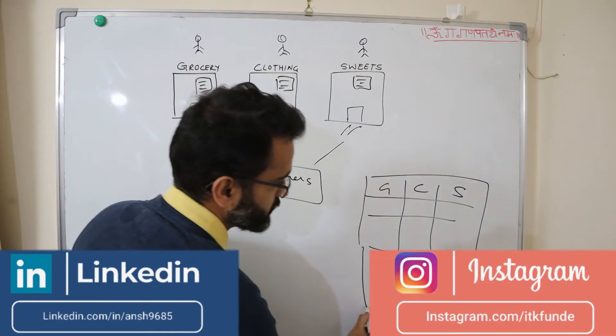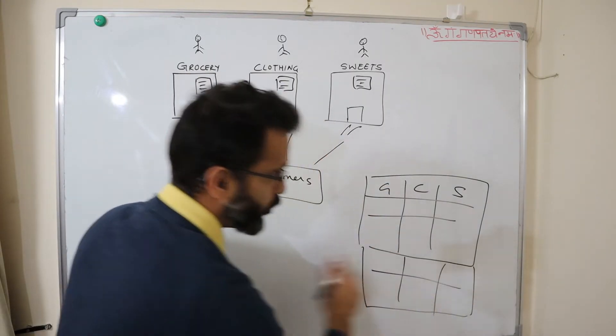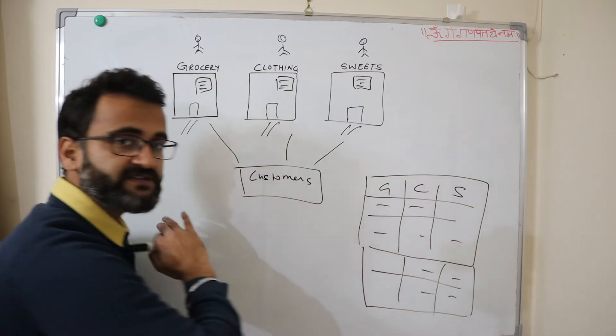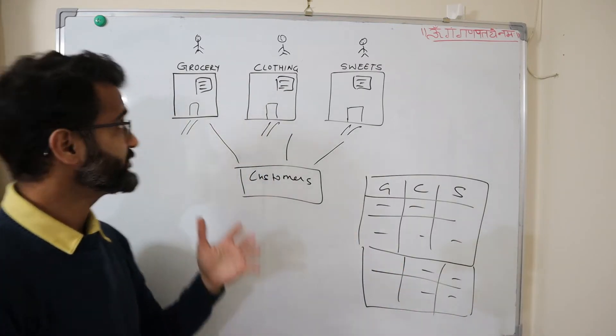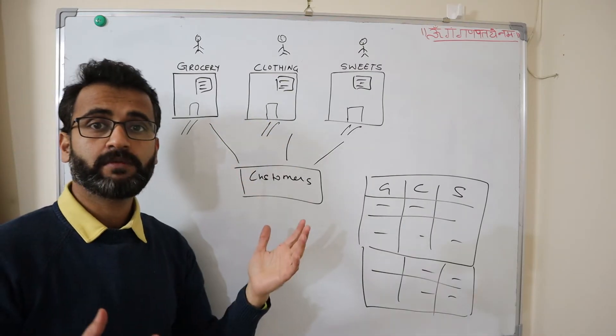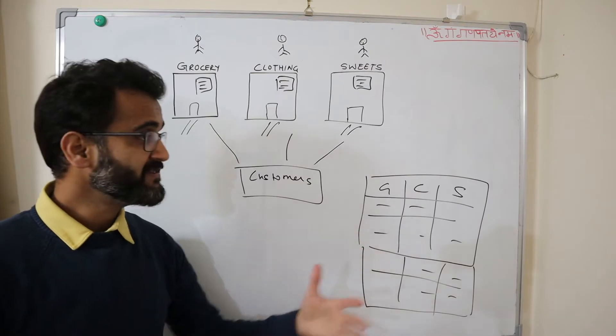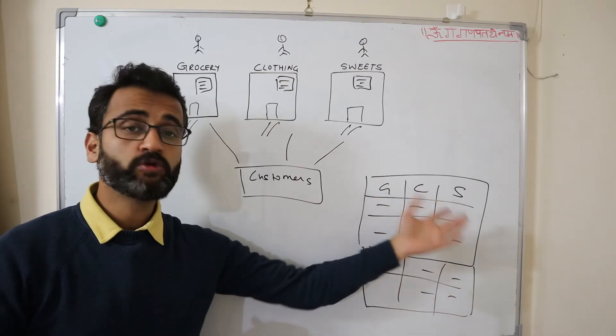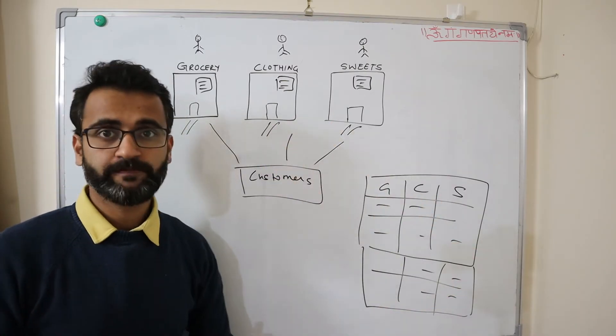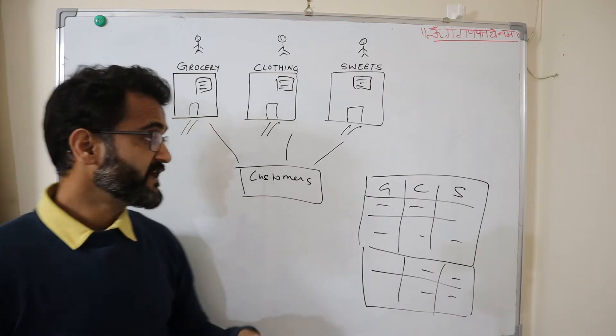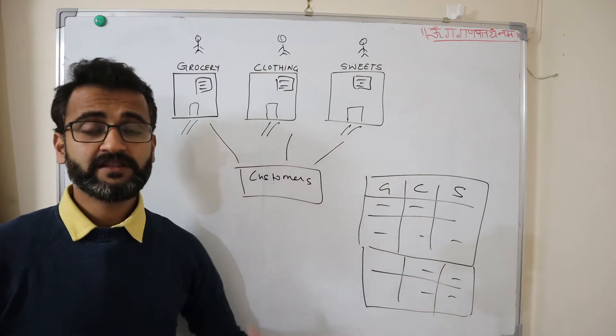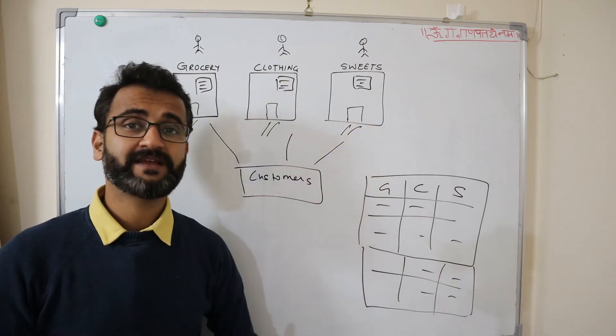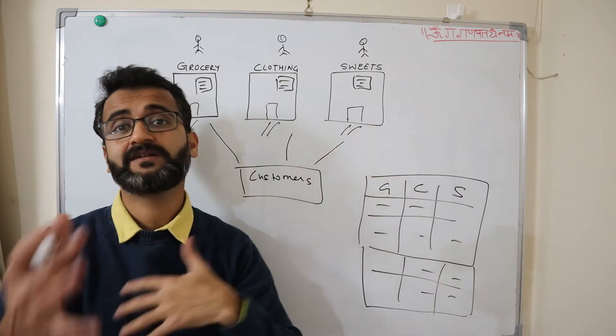This combined register will have data entered for all three shops: grocery, clothing and sweets. Now this was a bigger register because the entries were made for all the customers across all three shops. So there could be instances wherein a customer is coming and buying grocery but not buying anything from the other two shops. In that case, the register would just leave those items blank for clothing and sweets and likewise for other shops also. But the advantage was that when at the end of the month they used to see this register, they got all the details at one place. They didn't have to look up all the different registers, combine the data, and the process of retrieving the data became very fast.